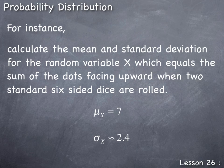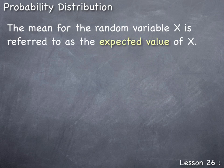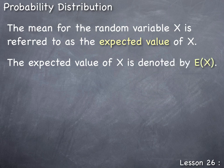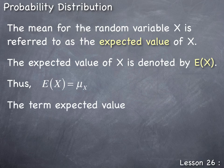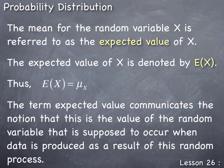The mean of a random variable X is referred to as the expected value of X, denoted E(X), where E(X) = μ_X. The term 'expected value' communicates that this is the value the random variable is supposed to produce as the typical result of the random process. We can hope for the best or fear the worst, but we should always expect the typical, usual, or average result — the expected outcome is the mean outcome.